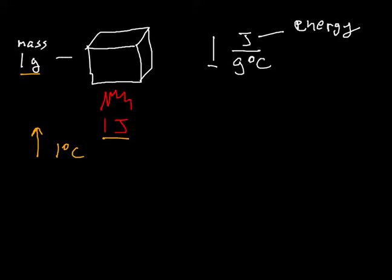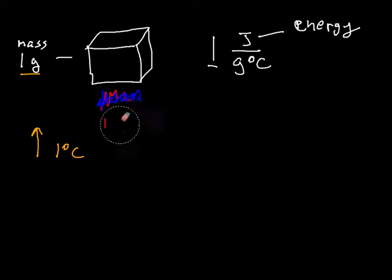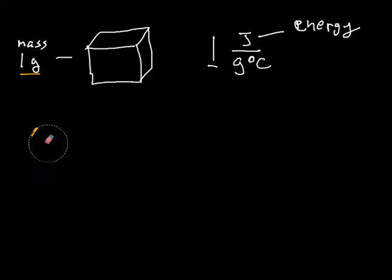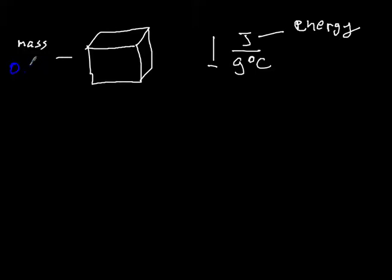Since I'm giving it heat, it's going to go up by one degree Celsius. If I took away heat — instead of heating it, I put some ice cubes on it and took away a joule of heat — it would go down by one degree Celsius. Now let's change it: instead of the mass being one gram, let's make the mass half a gram.